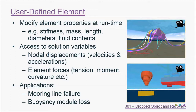I'd encourage you to have a go and see how it works for your applications — if you have questions, contact our technical support helpline. As well as modifying element properties, you also have access to all solution variables in FlexCom. For example, to simulate a mooring line failure: knowing the tension in the mooring line as a function of time in every element, you could monitor that, and if the tension exceeded a critical value, reset the axial stiffness of one of those mooring line elements to zero or near-zero, simulating an actual breakage. There are many potential applications, and we'd be delighted to hear any feedback on this feature.